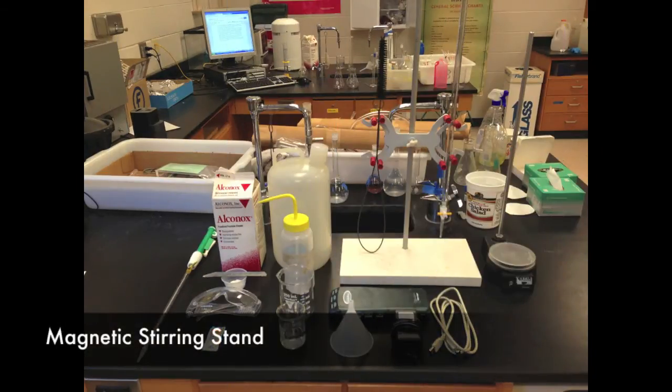During the experiment, your titrant and your titrated solution will be constantly mixing and changing the pH. For this step most optimally, you're going to want to use a magnetic stirring stand.